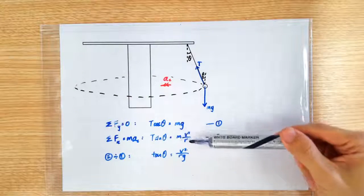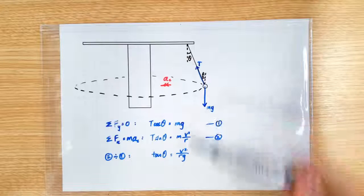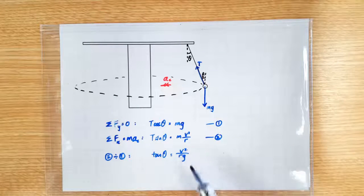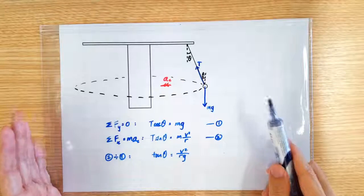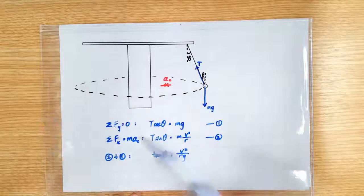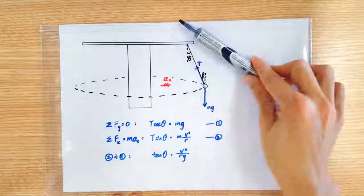So equation 2 divided by equation 1, we get yet again this expression, tangent theta is v squared over rg. And we can actually now appreciate why when the flying chairs go faster and faster, they will actually rise up.